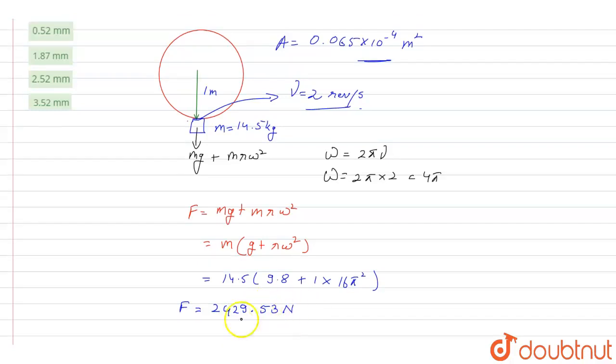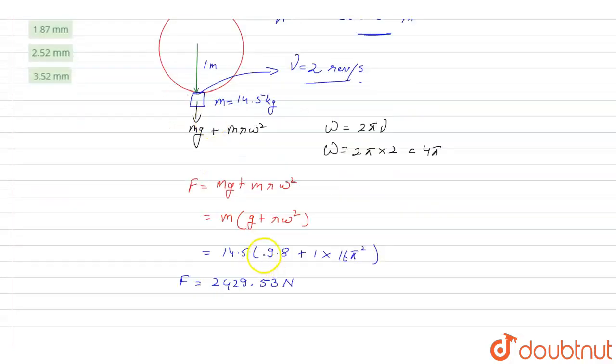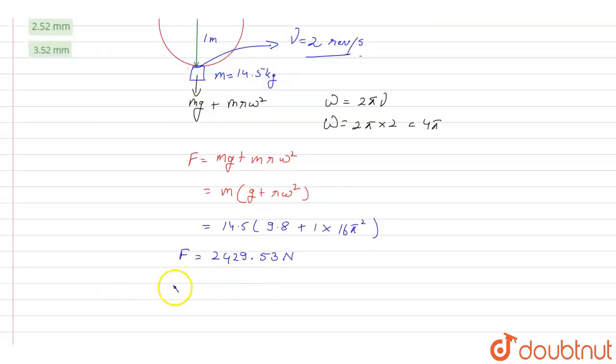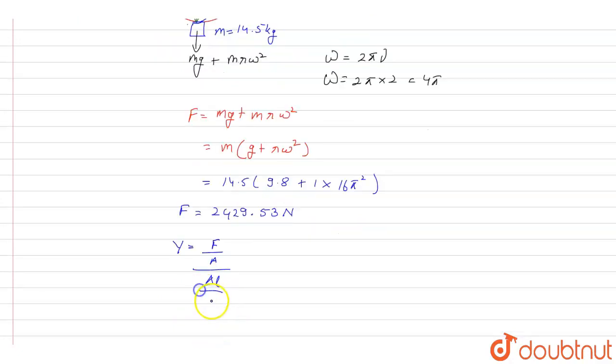Now we have the force on this wire at the lowest point. To calculate the elongation of the wire, let me write the Young's modulus for this wire. Y will be equal to force upon area divided by change in length upon original length. So it will be equal to force upon area into L upon delta L.